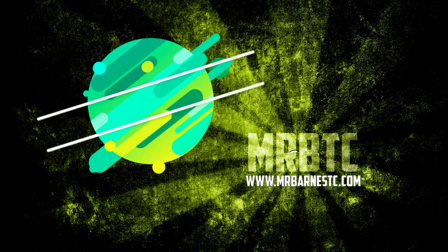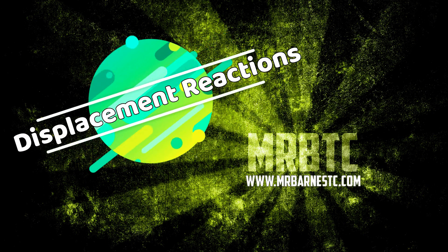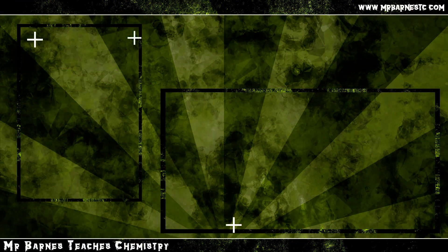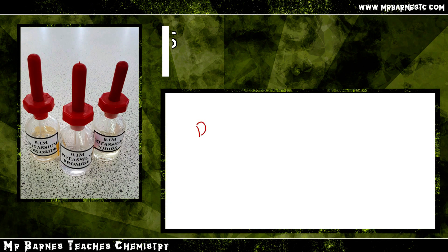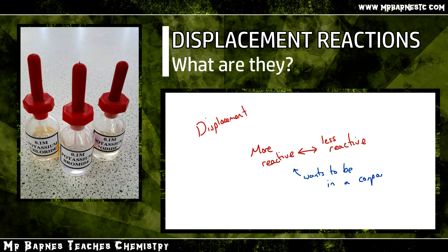Hi guys, welcome to this video looking at the displacement reactions of halogens. You should have covered displacement reactions before. You should remember that a displacement reaction is where a more reactive metal or element swaps with a less reactive metal or element. So the question is: how can we use this to work out the reactivity of chlorine, bromine and iodine?